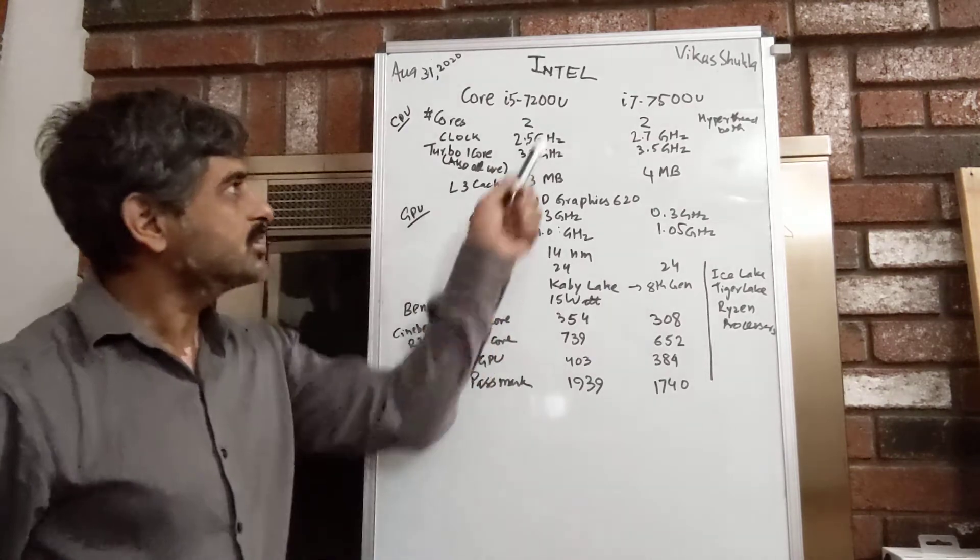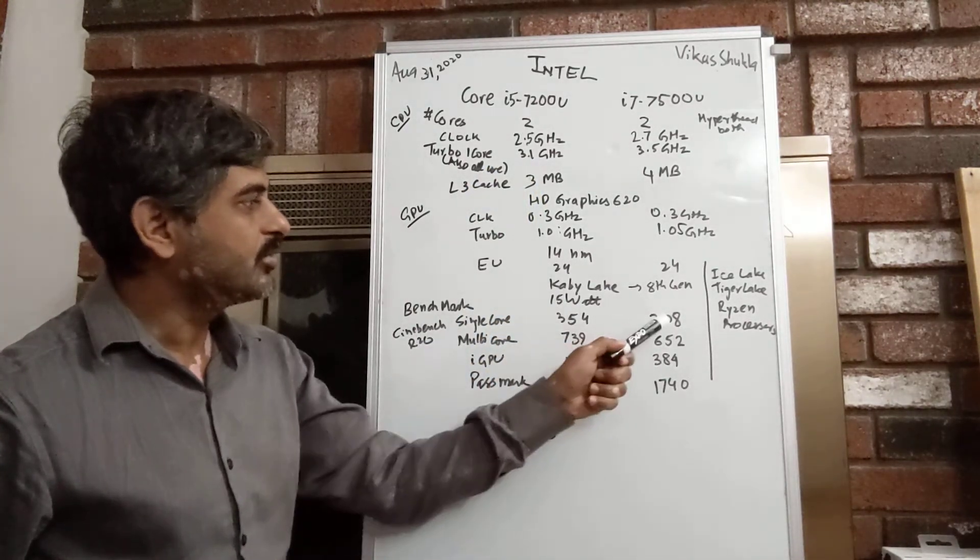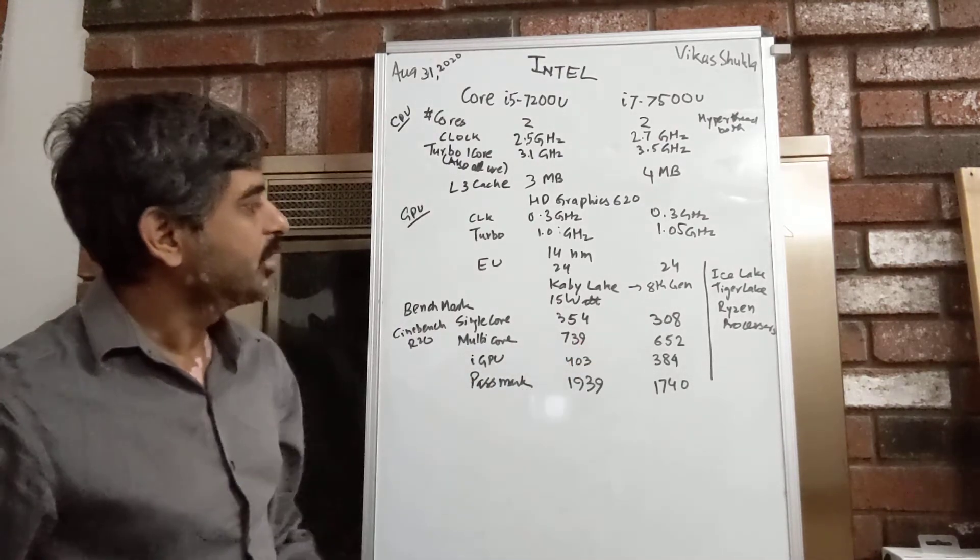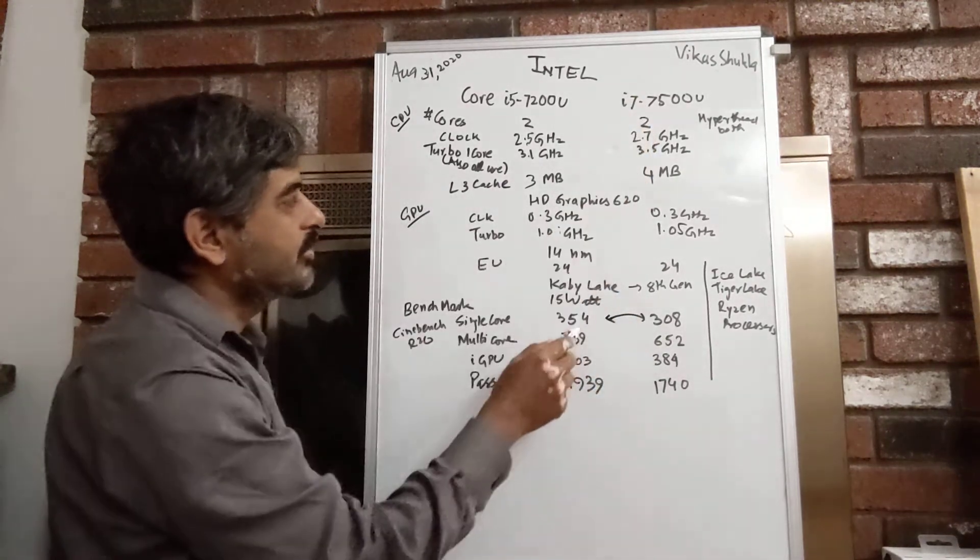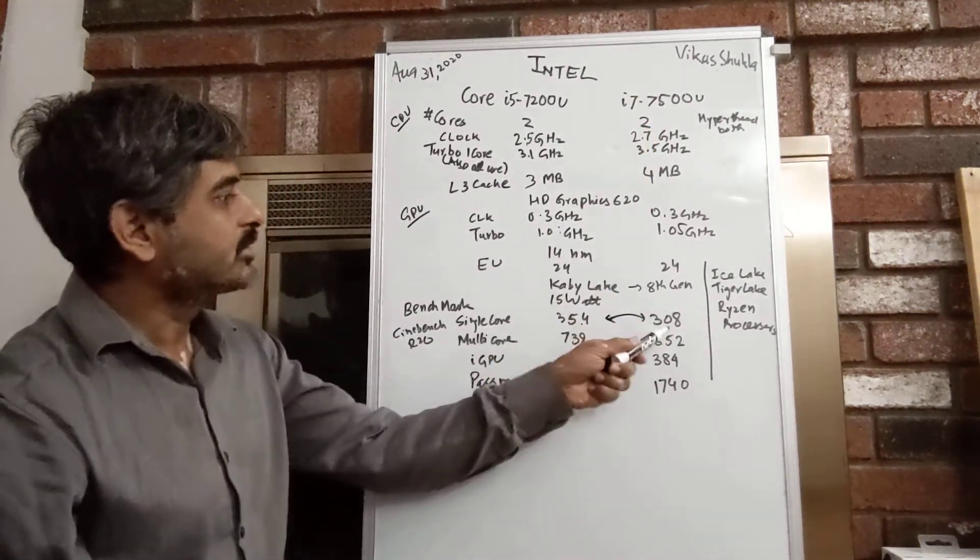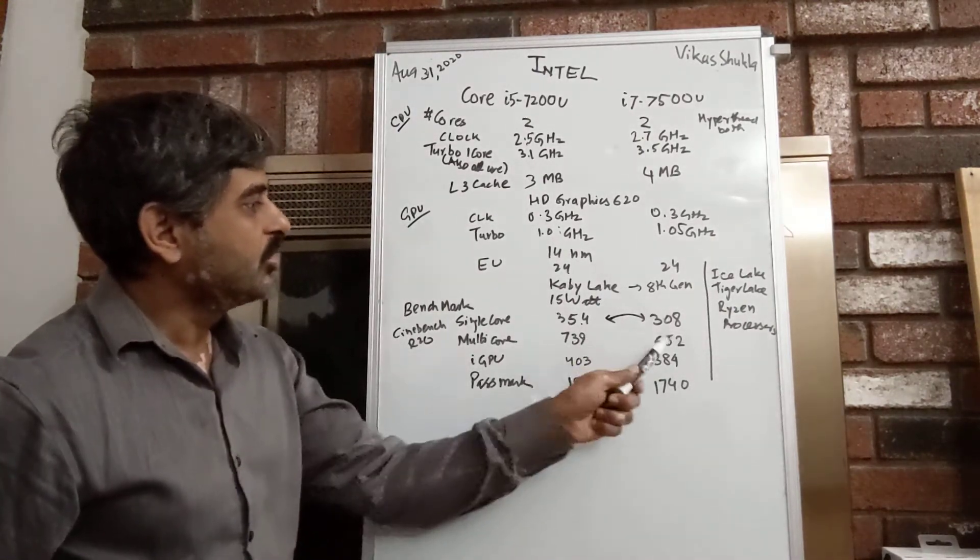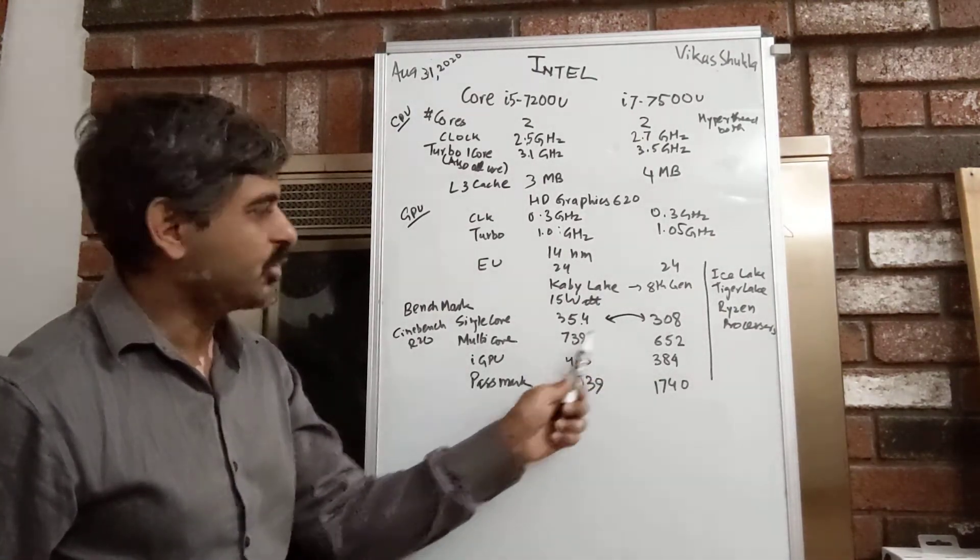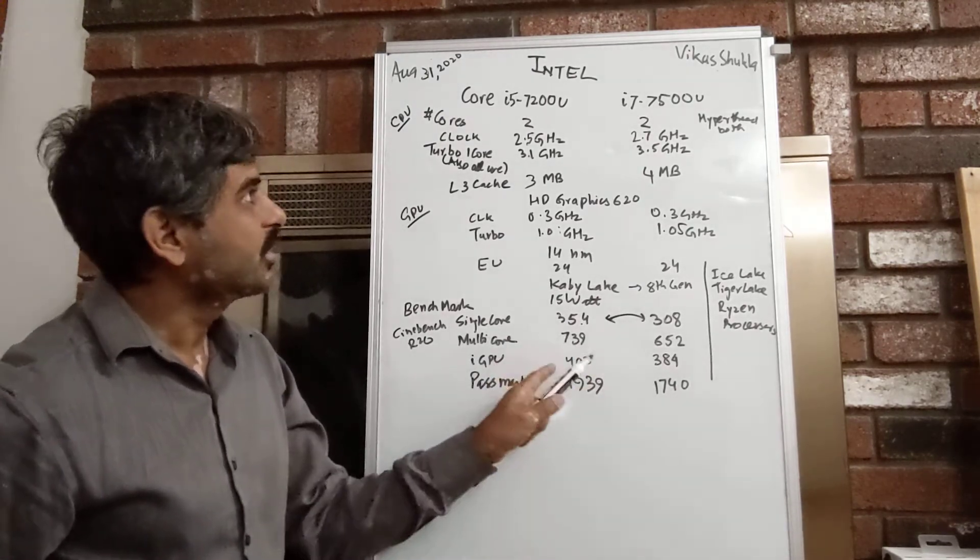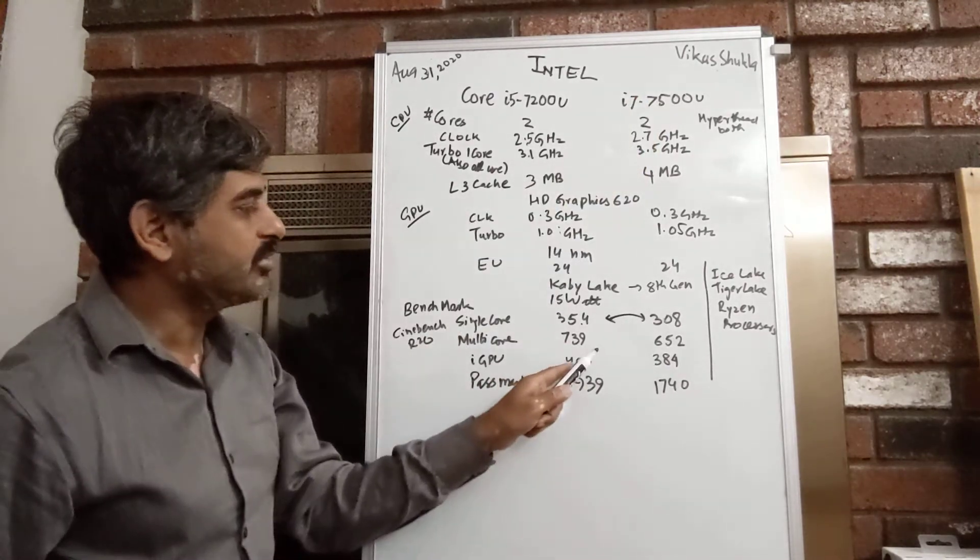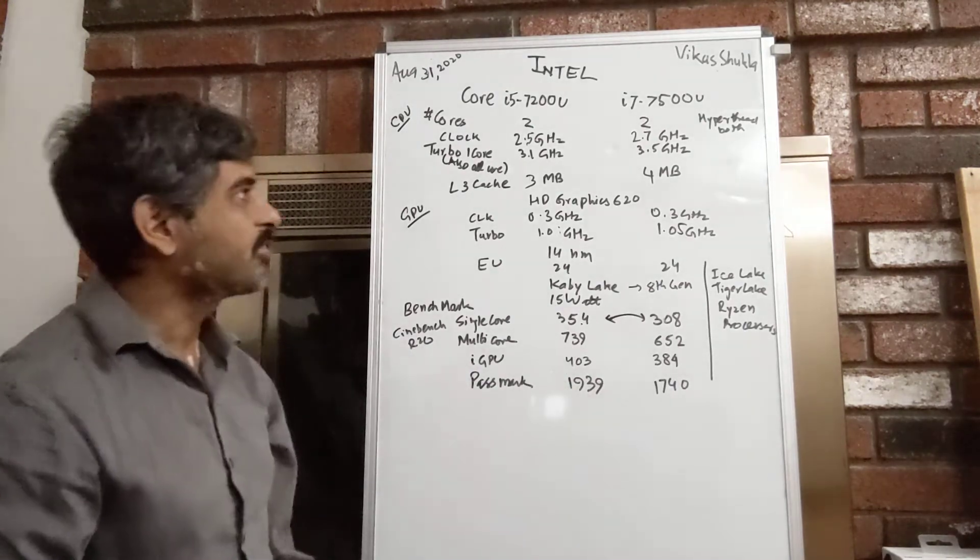These differences are reflected in the benchmark scores of 354 versus 308. Again, these numbers are swapped, so we have 354 for i7 versus 308 for i5-7200U. We are looking at 15% to 20% performance difference and that's the same for integrated graphics. You can see i7-7500U is a little higher here. The PassMark score also reflects this.